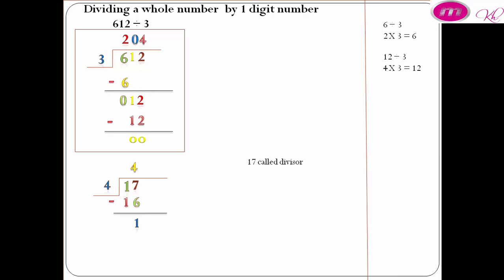17 is called the dividend. 4 is called the divisor. 4 is called the quotient. 1 is called the remainder.